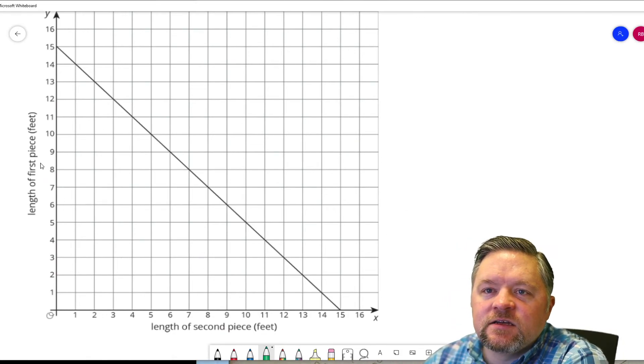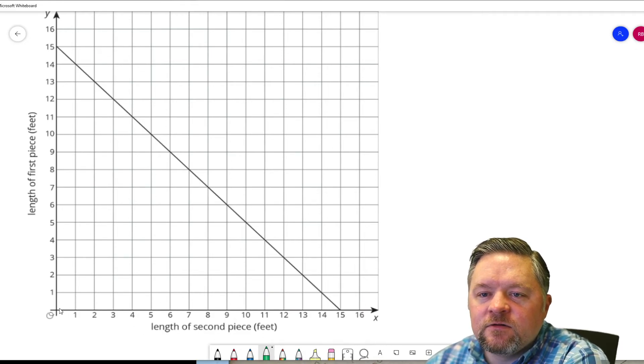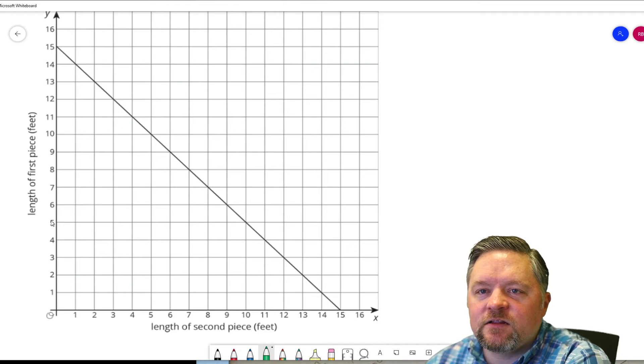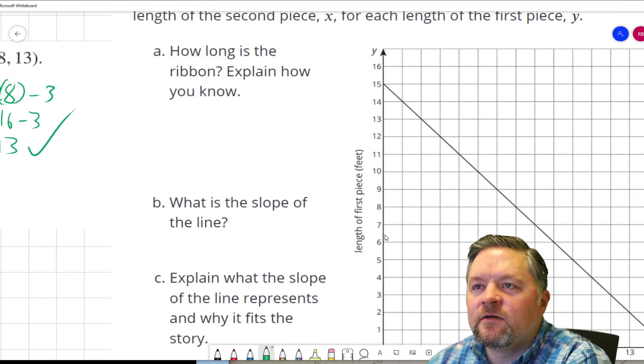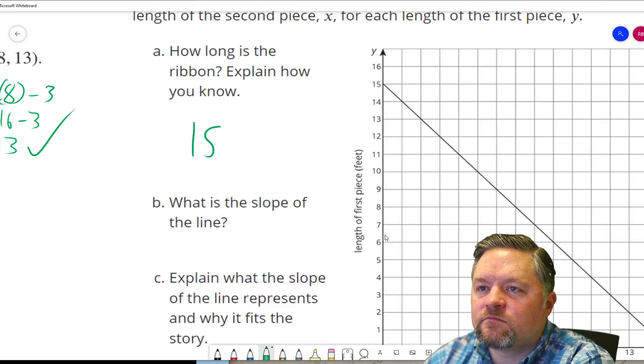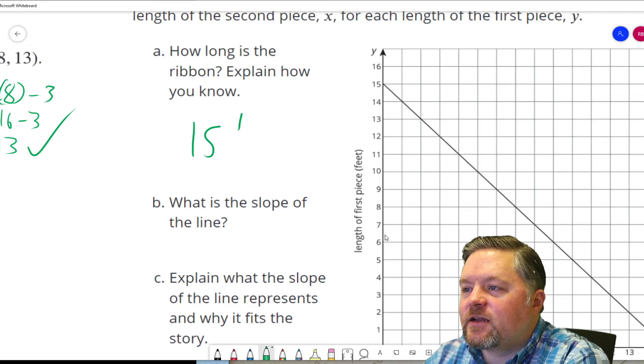So, what I notice is if the length of the first piece is 15, the length of the second piece is 0. If the length of the second piece is 15, the length of the first piece is 0. How long is the ribbon? 15 feet. The longest we can get is 15 feet.